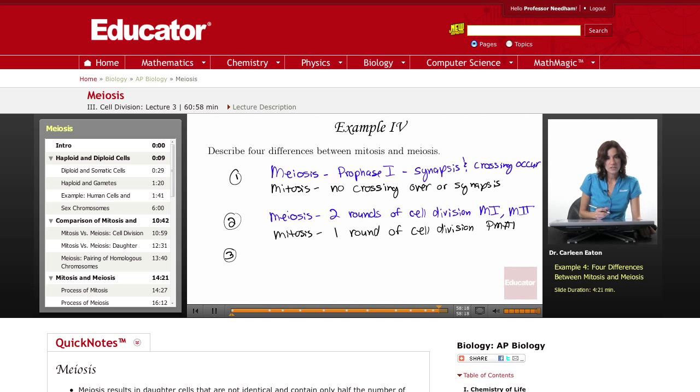The result of meiosis is four non-identical daughter cells. Mitosis, very different result: two identical daughter cells.